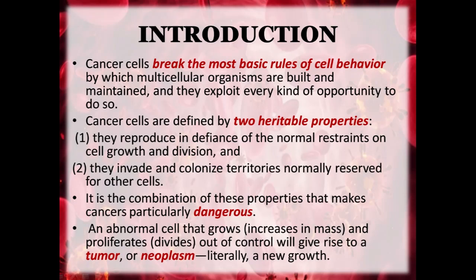They reproduce in defiance of the normal restrictions on cell growth and division, and they invade and colonise territories normally reserved for other cells. It is the combination of these two properties that makes cancer particularly dangerous. An abnormal cell that grows and proliferates out of control will give rise to a tumour or neoplasm, which literally means a new growth. Cancer results from failures of the mechanisms that usually control the growth and proliferation of cells.